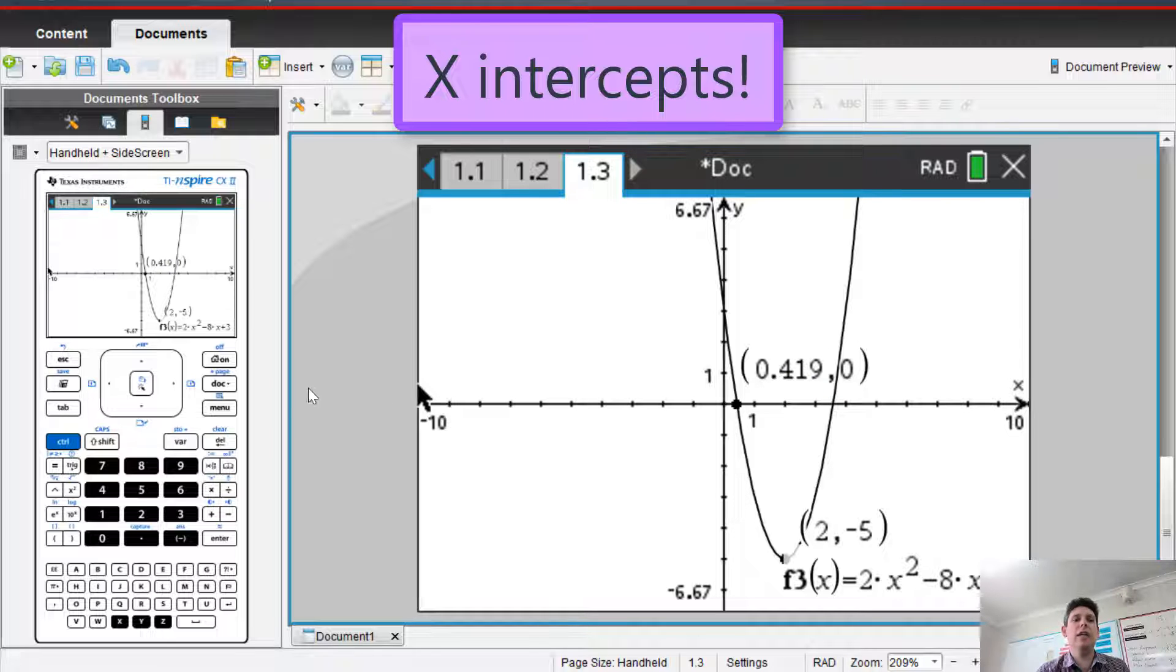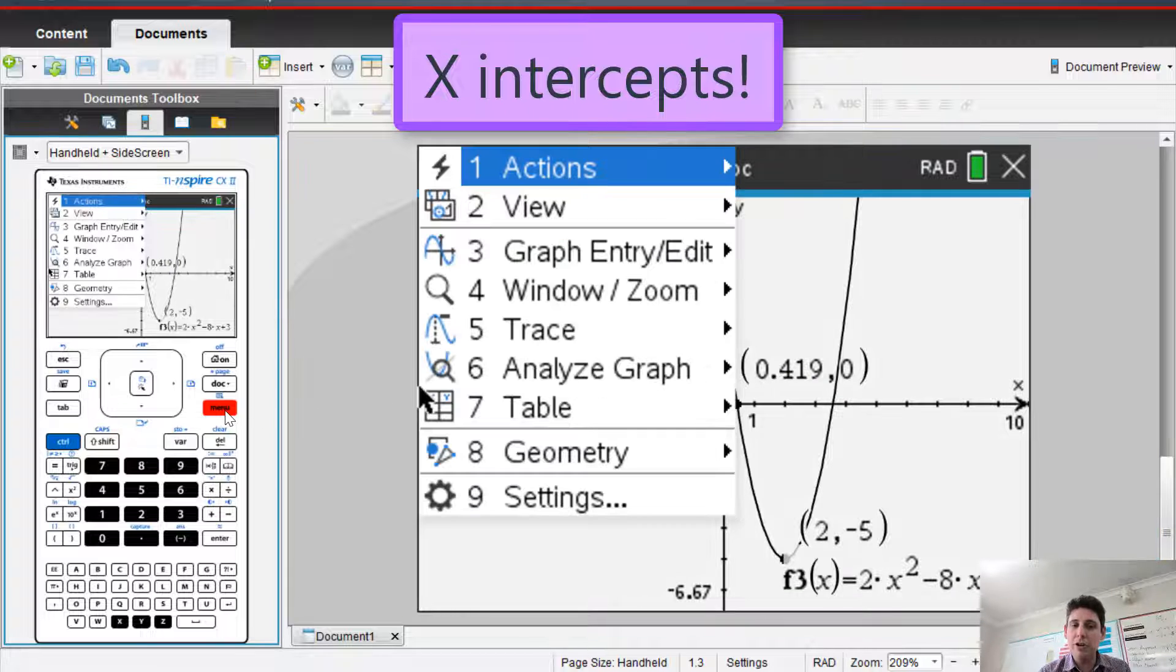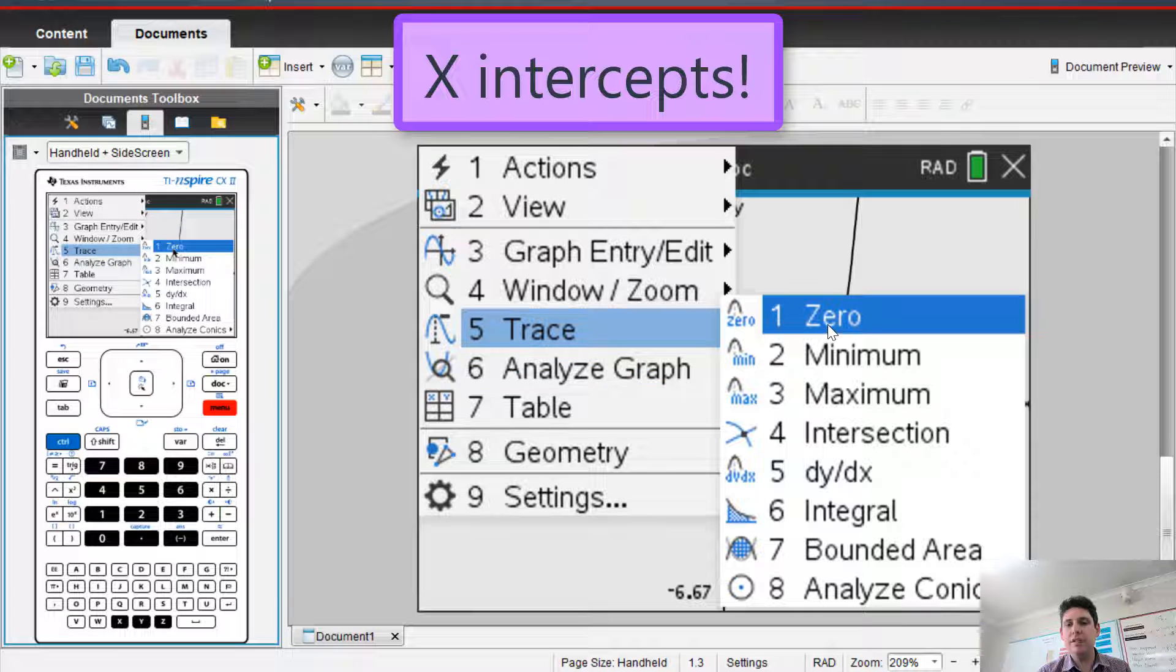You'll need to do it again. I'll do it again. So watch. Menu. Analyze graph. Zero.